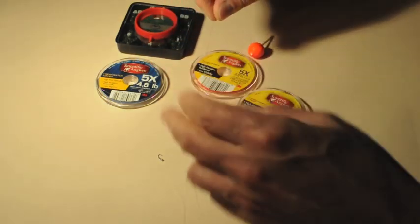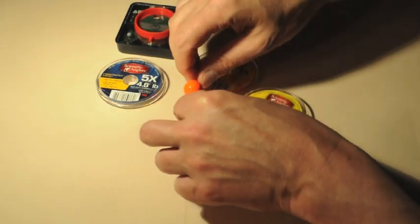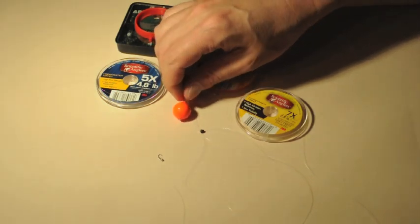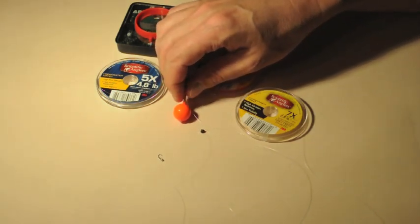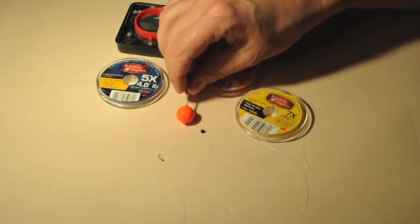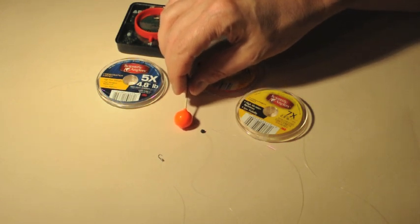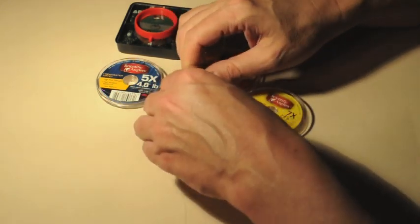When you set the depth, then you have some kind of indicator. That's kind of a large one, but certainly easy to see. I would probably go to a little smaller one that would be more subtle, but the point is this is a corky.